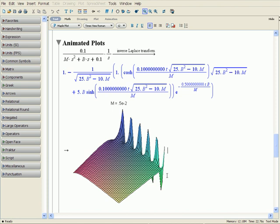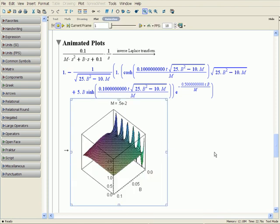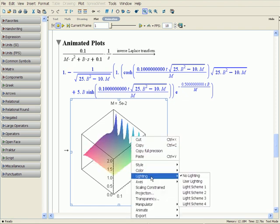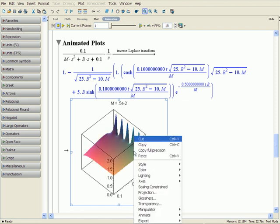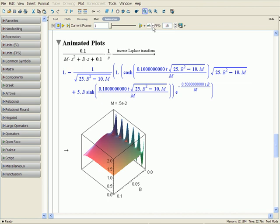The appearance of all 3D plots, including animations, may be modified using context menu options. We can change the type of surface used, the lighting scheme, and even the glossiness. The animation toolbar contains options to control the playback of animated plots.